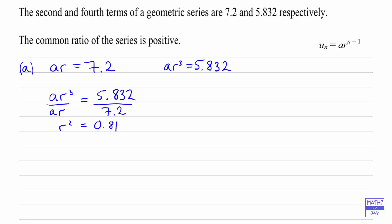Usually, if we have something squared equals a number, we'd have two answers. This is why we've been told that the common ratio of a series is positive. We're only going to get one answer here, so instead of getting the negative answer as well, we've just got this positive answer. So that's part a done.